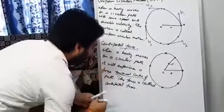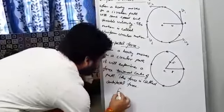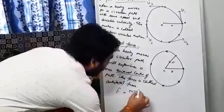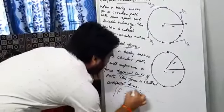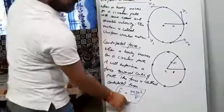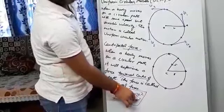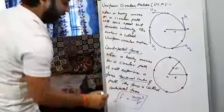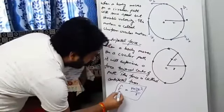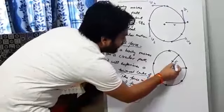The centripetal force F equals to M V square upon R. R is the radius of the circular path, M is the mass of the body and V is the velocity or speed of the particle or body. And the centripetal force, I will represent with FC. This is FC.